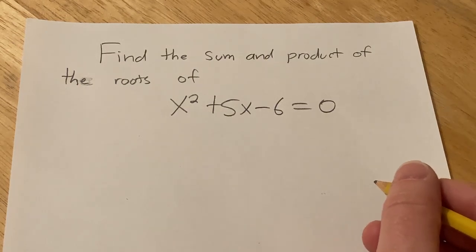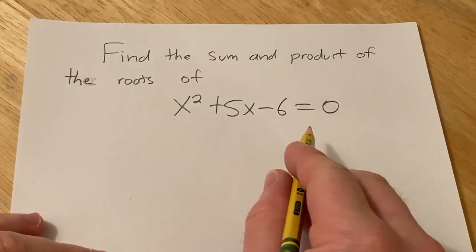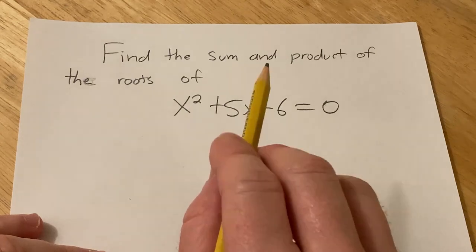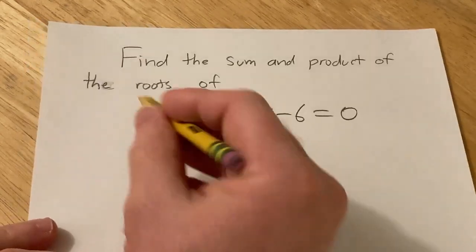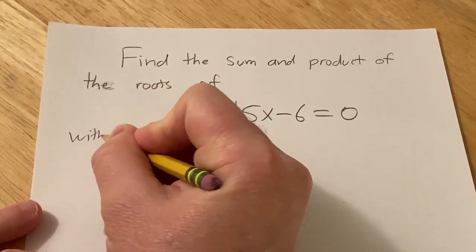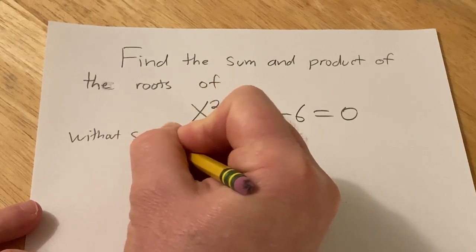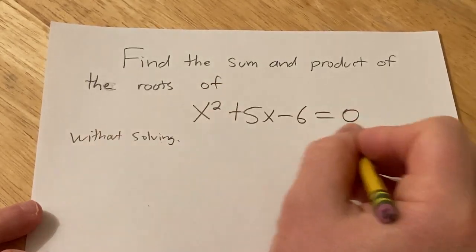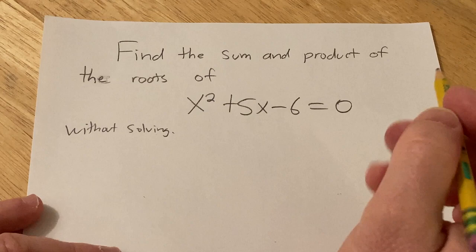In this problem we're going to find the sum and product of the roots of this equation, and we're going to do it without solving the equation. So we're going to do this without solving. So we're not going to solve this for x, instead we're just going to find the sum and product.